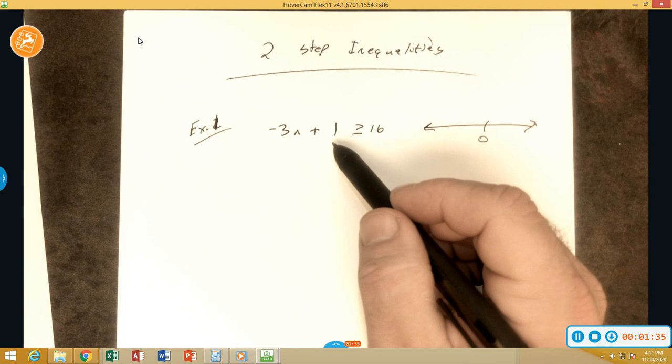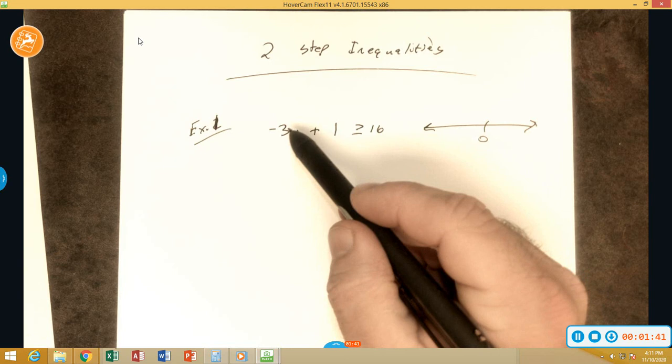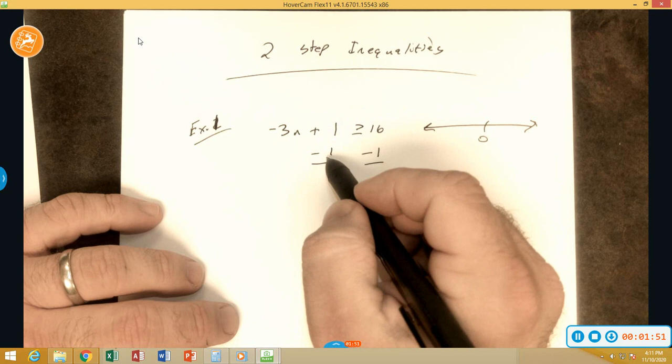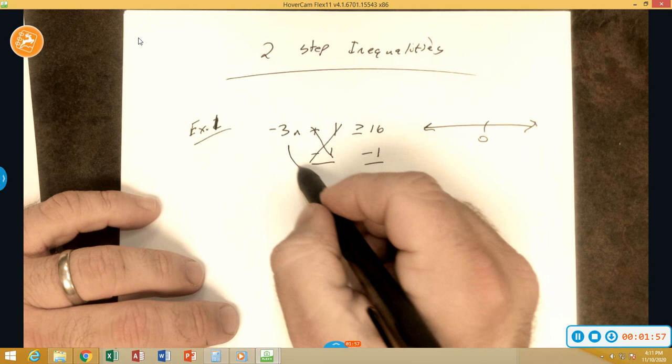We do it backwards, so instead of this first, this second, we will do the adding first and then this second. So instead of adding, we're going to have to do the opposite and subtract. What we do on the left, we do on the right. 1 minus 1, these cancel out because they're 0. This is going to leave us with negative 3n on the left, greater than or equal to 16 minus 1 is 15.